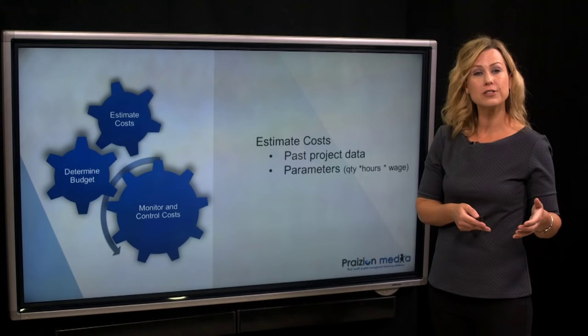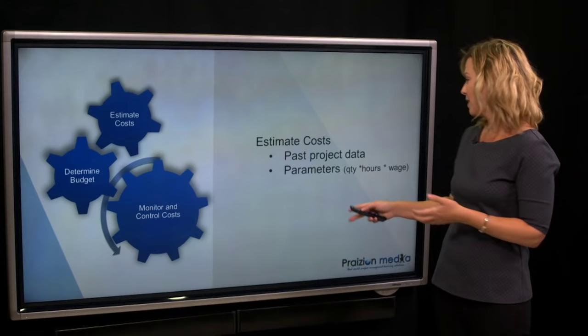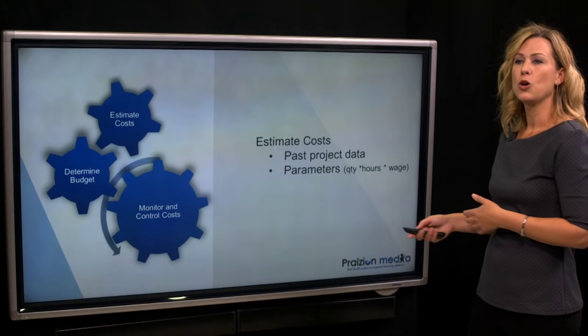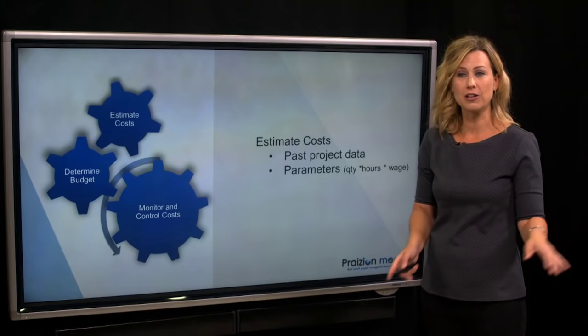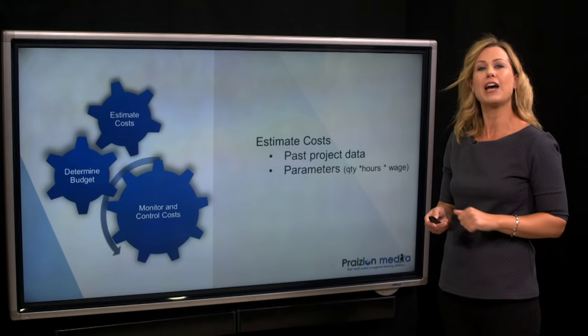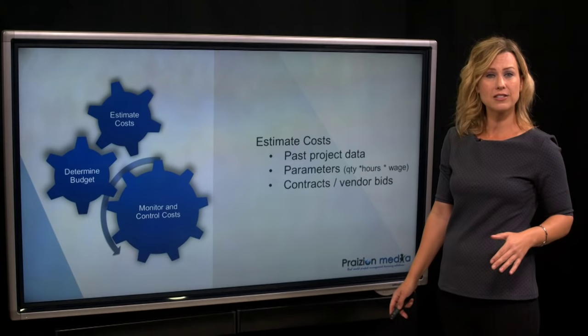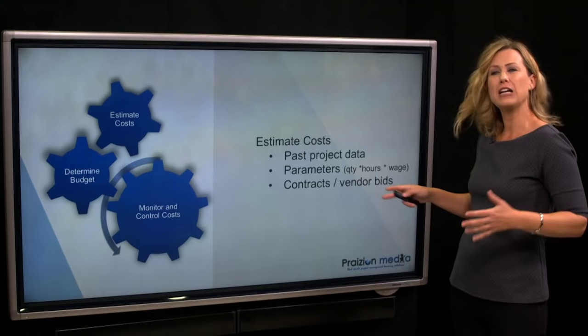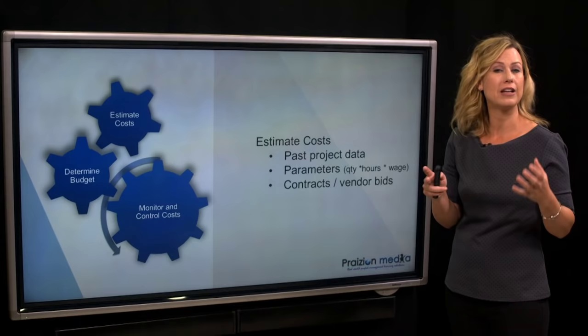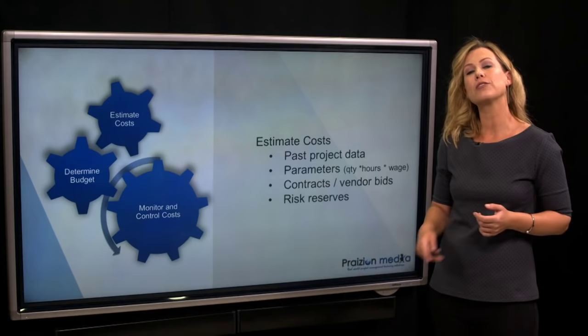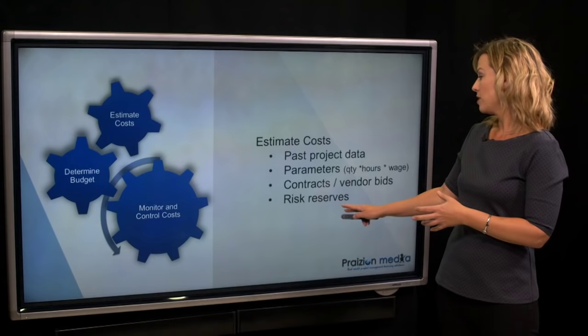A parametric estimate is where you literally say how many hours do I need this resource — people, materials, equipment, facilities — how many resources, what's their wage? This might be very accurate because you've already agreed on the wage and hours. Or it might be murky because you're not quite sure how many hours you need. You might have very confident estimates because you've got a contract signed with a supplier, or you might be close to accurate because there are vendor bids and you know the general cost. But risk reserves — a lot of us don't know how to analyze what could go wrong and how much that risk will actually cost our project.